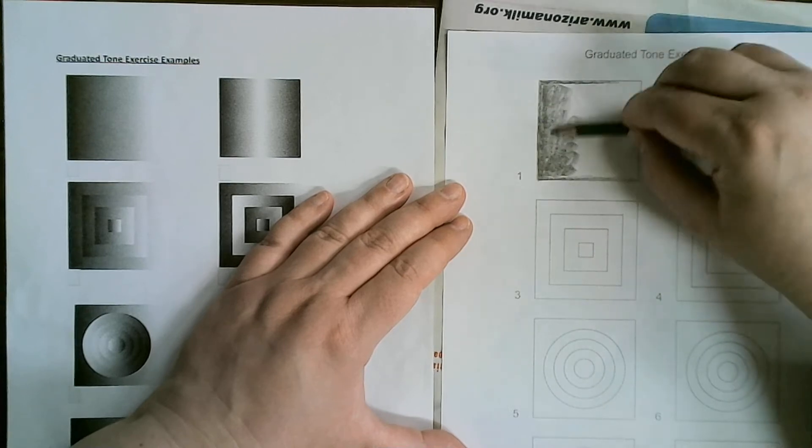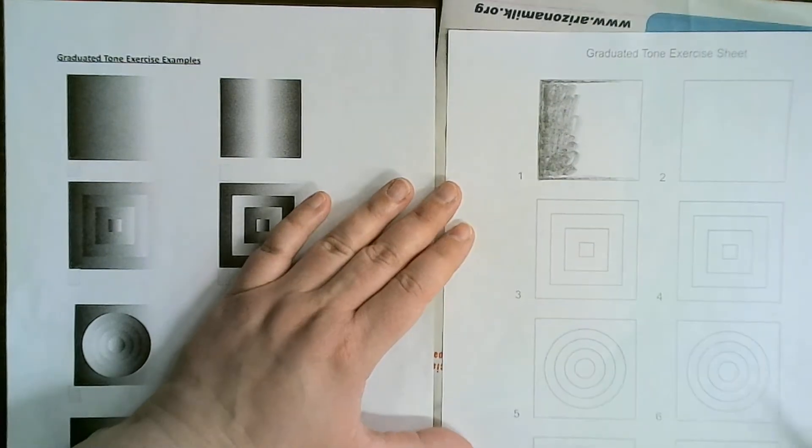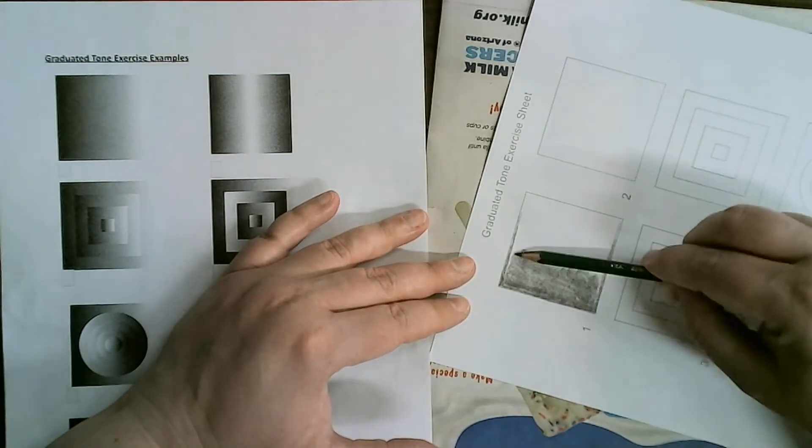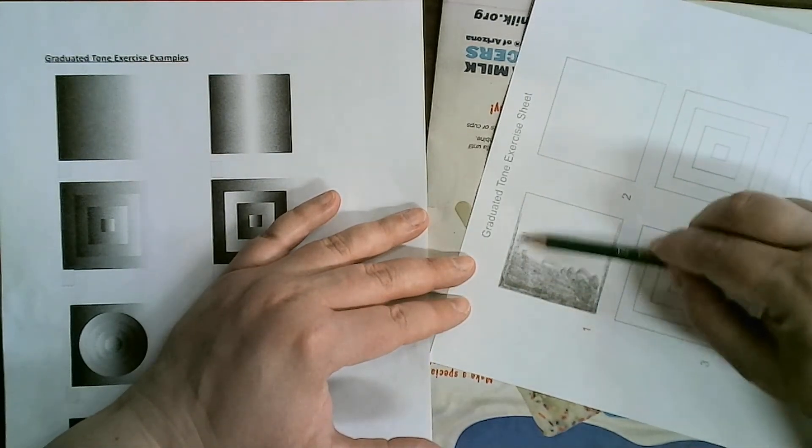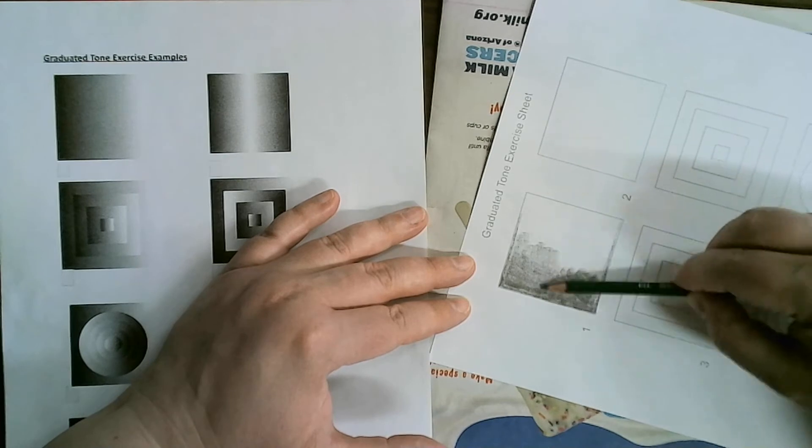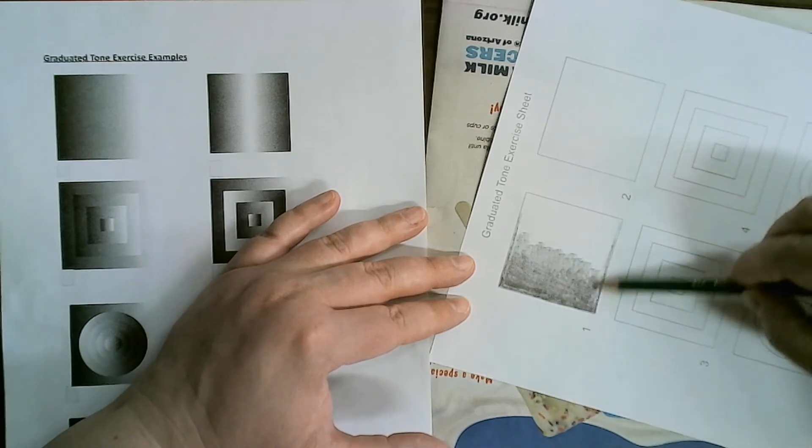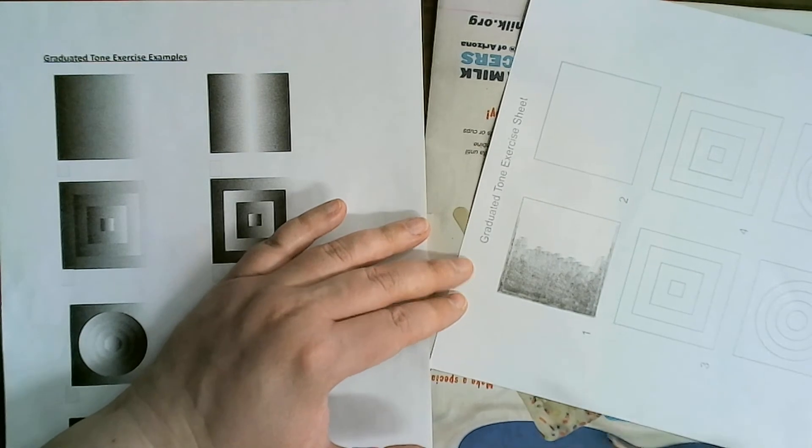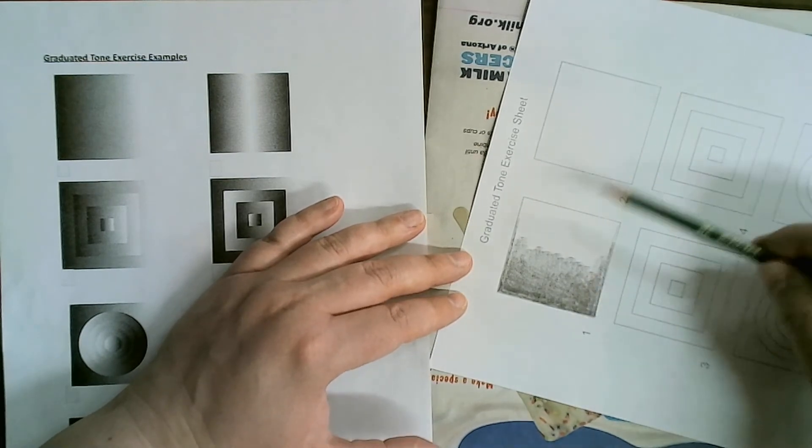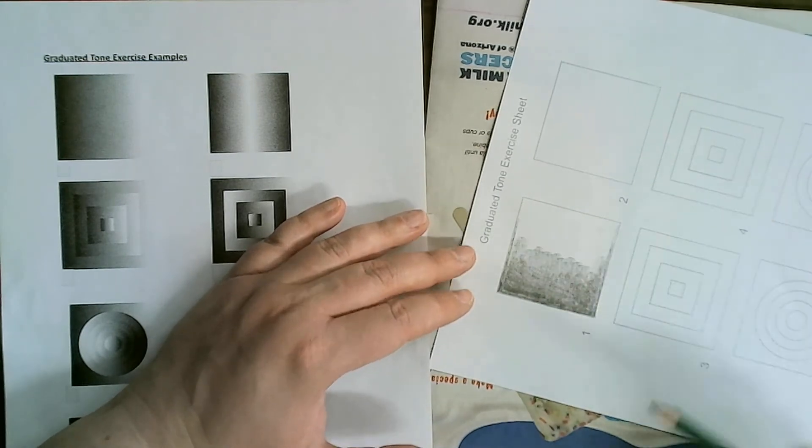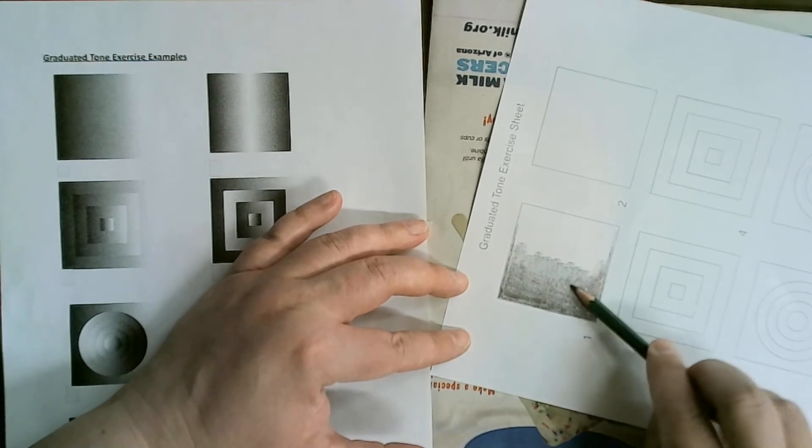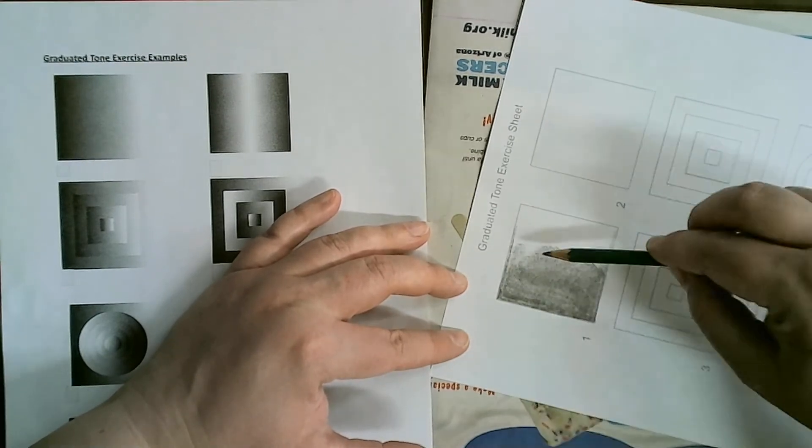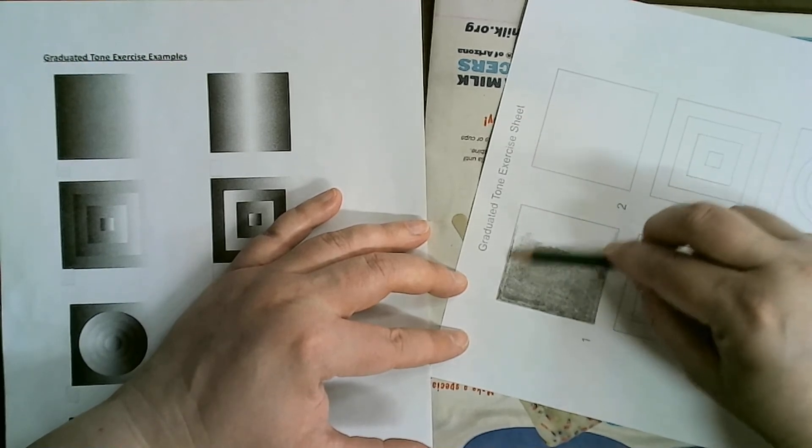For graphite, we have to do layers to kind of build it up. You can turn the paper so your arm is comfortable. The different directions help to make it look smooth. I was going kind of horizontally. Now I'm going to go diagonally with a circular motion because I'm already starting to lighten up my pressure to fade out. I'm kind of lifting up my wrist a little bit.